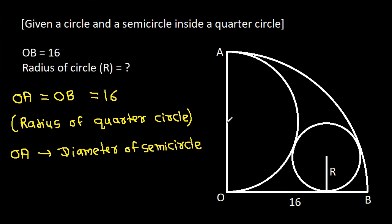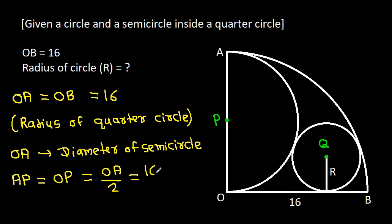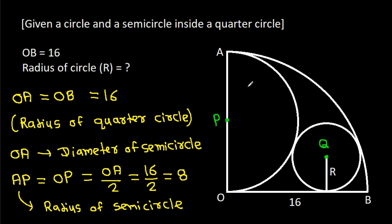Suppose the centre of the semicircle is P and the centre of the circle is Q. Then AP will be equal to OP, which will be OA over 2, and OA is 16 over 2, that will be 8. It is the radius of the semicircle. So we get AP is 8 and OP is 8.